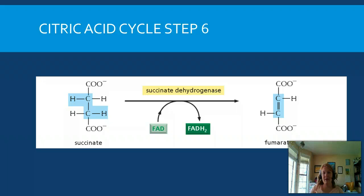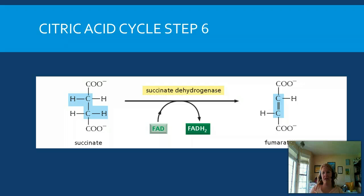In step six, we're coming back on the other side of the cycle with our goal of getting back to oxaloacetate. We move through an oxidation step that pulls off two electrons, producing FADH2. FADH2 actually carries two high-energy electrons instead of one as with NADH, so it's important to understand that FADH2 carries more electrons.